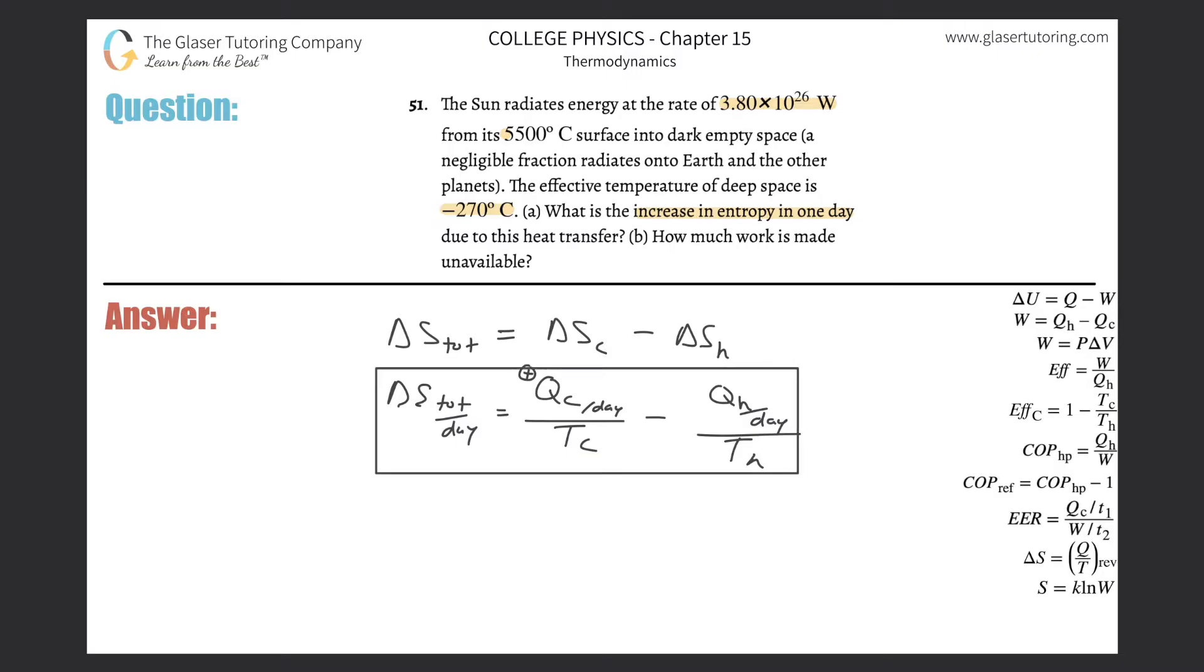So how do we do this? How do we find the heat gained or heat lost per day? Well, they told us the watts of the sun. So you got to remember watt is joule per second. So we can reorganize this as 3.80 times 10 to the 26 watts, which is essentially joules per second. So this is the amount of energy being radiated from the sun, lost from the sun, gained by the deep space every single second.